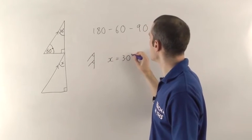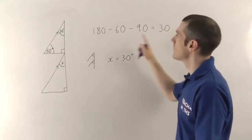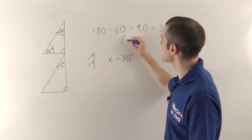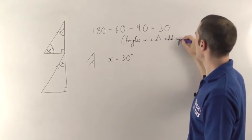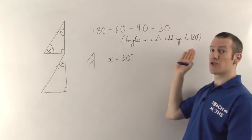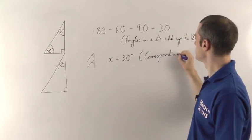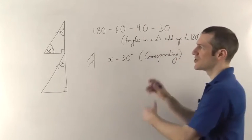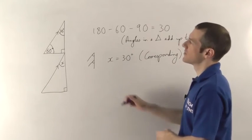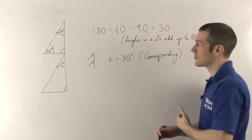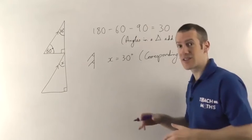Sometimes when they ask these questions, they'll ask you to justify your answers. So you'd say: this equals 30 degrees because angles in a triangle add up to 180 degrees, and X is 30 degrees because it's corresponding. You wouldn't need to write much more than that — just make it clear what angle fact you've used.